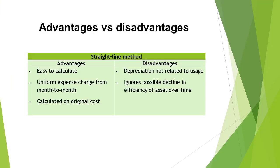The advantages of using the straight line method are that it is easy to calculate, the business charges the same for depreciation from month to month, and it is calculated on the original cost price. The disadvantages are that the depreciation does not relate to the usage of the asset, and the possible decline of efficiency of the asset over time is ignored.